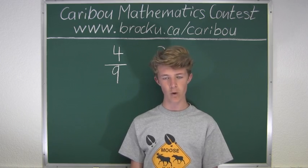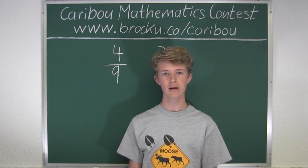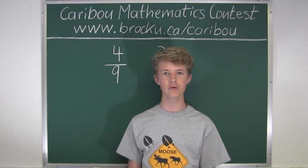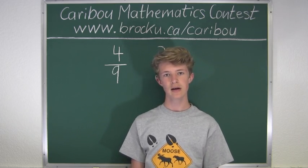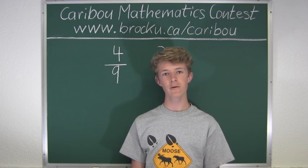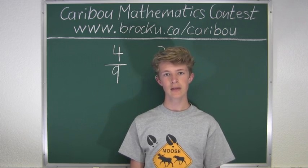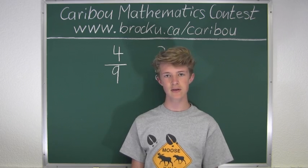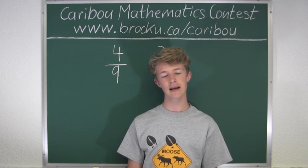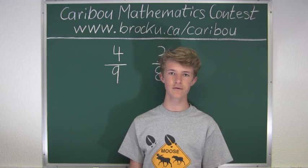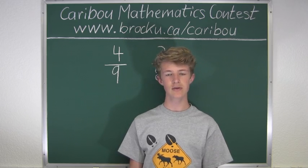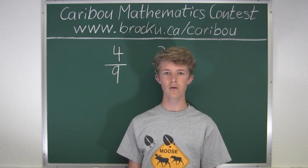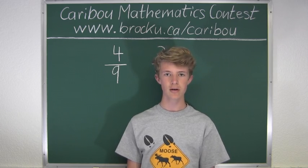For the $1 coin, the probability of getting heads is 1 over 2, because it's heads or tails. Then for the $2 coin, there are again two possibilities, heads and tails, and to get heads it would be 1 out of 2. So you would multiply 1 over 2 by 1 over 2, which gives 1 over 4.